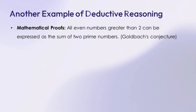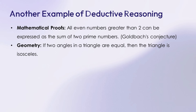All even numbers greater than 2 can be expressed as the sum of two prime numbers — the Goldbach conjecture. Number 2: geometry — if two angles in a triangle are equal, then the triangle is isosceles. Algebra — if x plus 3 equals 7, then x equals 4.